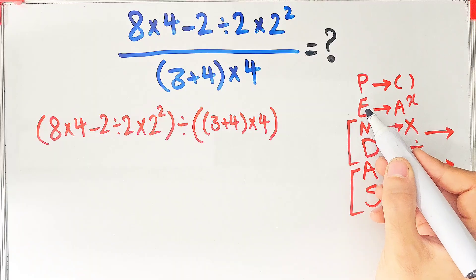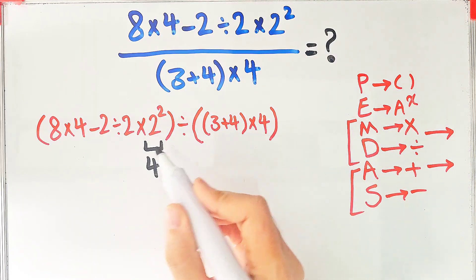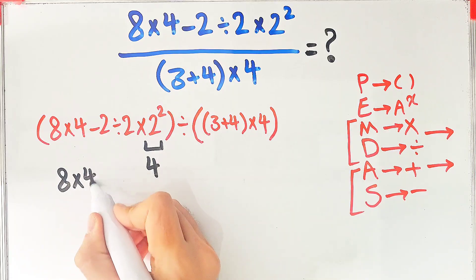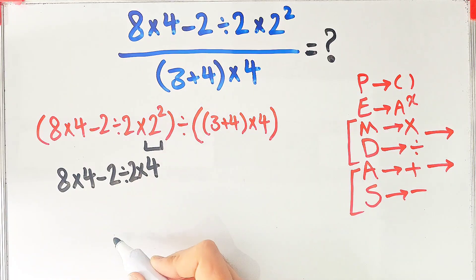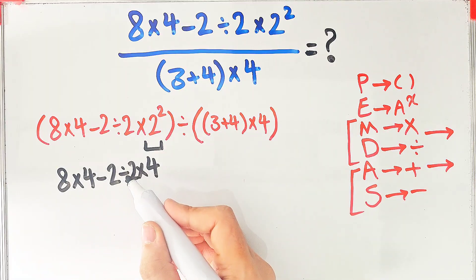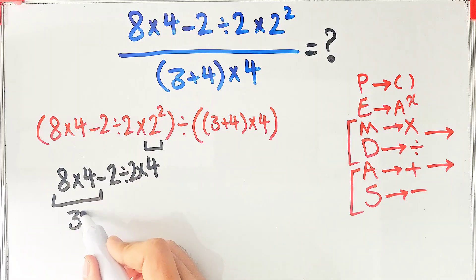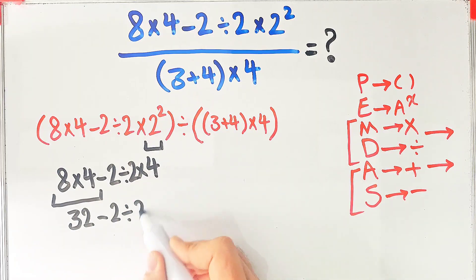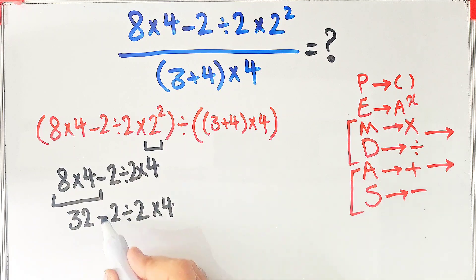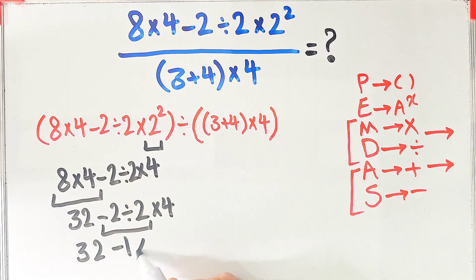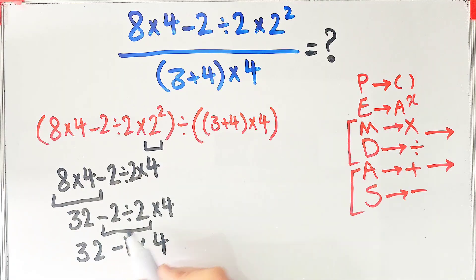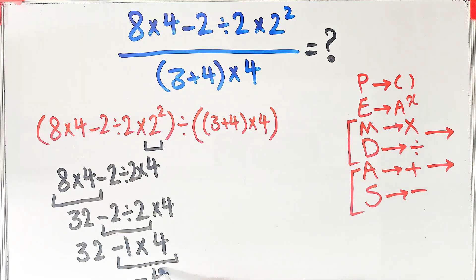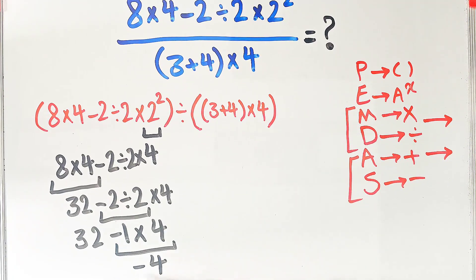First we do the exponent: two to the power of two equals four. Now we have eight times four minus two divided by two then times four. With multiplication, subtraction, and division present, we first do eight times four equals thirty-two, then two divided by two equals one, then one times four equals four. Since multiplication has higher priority than subtraction, we get thirty-two minus four equals twenty-eight. The answer of the first parentheses equals twenty-eight.